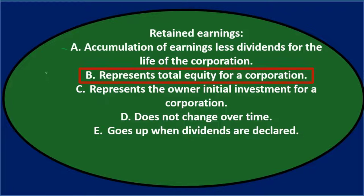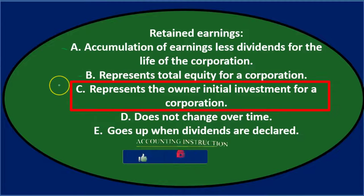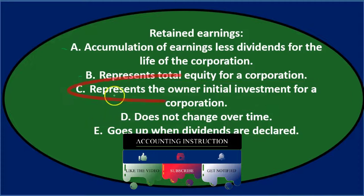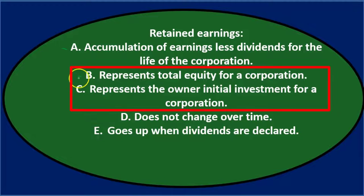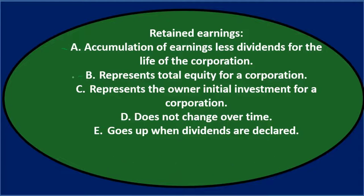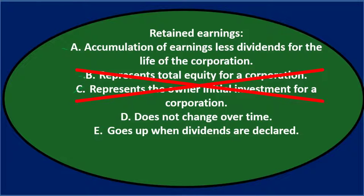B says represents total equity for the corporation — it's in the equity section, so I might keep that. C says represents the owner's initial investment — that doesn't sound right; that's what common stock is. Note that B and C might cancel each other out: B implies retained earnings equals total equity, but C suggests there are multiple equity components, so we can eliminate both. D says does not change over time — that doesn't sound right since most accounts change over time, so I'll eliminate that too.